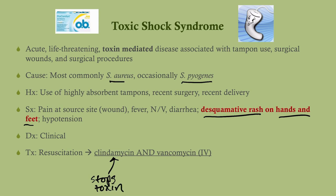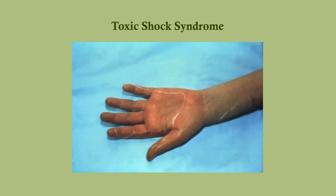Remember, clindamycin blocks the ribosome. What does the ribosome do? It makes proteins, including toxins. Vancomycin kills the infection. So we need to do both. This desquamative rash is the giveaway here.